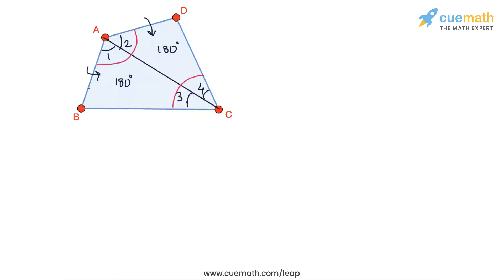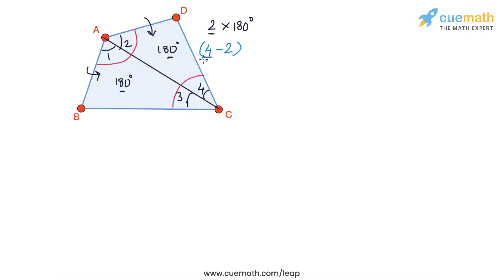If we add them up, we get the sum of all four angles — A, B, C, and D — equal to 180 plus 180, or 360 degrees. We can think of this as 2 into 180 degrees, where 2 is the number of triangular parts. The relationship between 2 and the number of sides is: 4 sides minus 2 equals 2 triangular parts. So the total angle sum is (4 − 2) × 180 degrees.